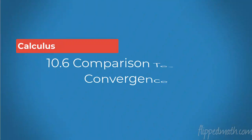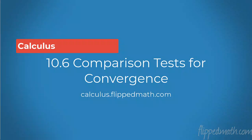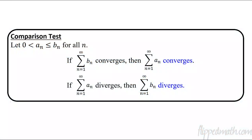Hello, Calc kids! Welcome back to another lesson in calculus. This is Mr. Bean, and today we're going to talk about some comparison tests for convergence. There are two different types of comparison tests we're going to look at today, and we're going to use these when we're faced with trying to figure out the convergence or divergence of a series that just looks really complicated. So what we do is we compare it to something that is easier, something we already have learned about figuring out convergence, like a geometric or a p-series, something like that.